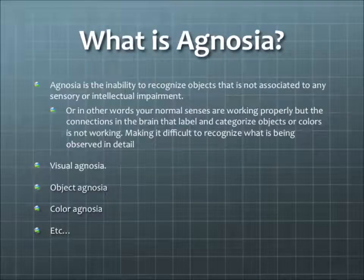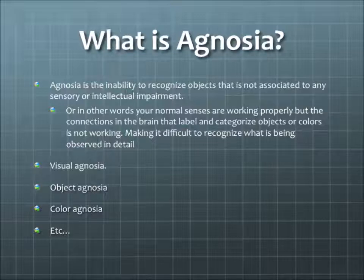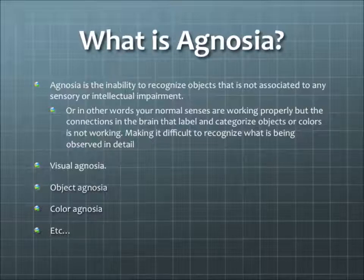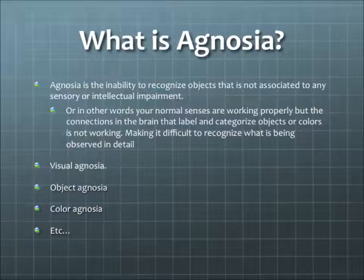Agnosia is the inability to recognize objects that is not associated with any sensory or intellectual impairment. In other words, your normal senses are working properly, but the connections in the brain that label and categorize objects or colors are not working, making it difficult to recognize what is being observed in detail.